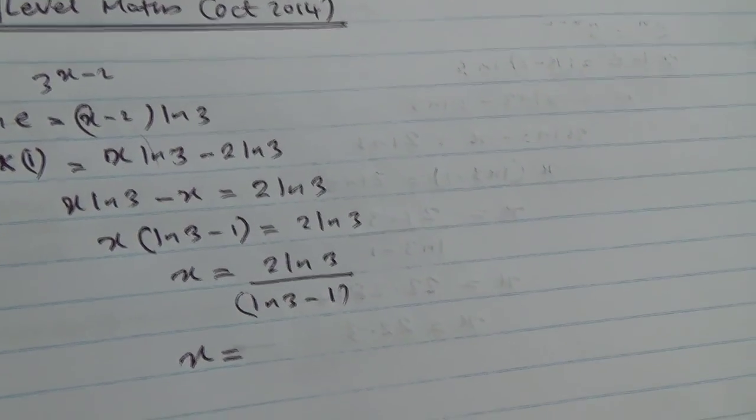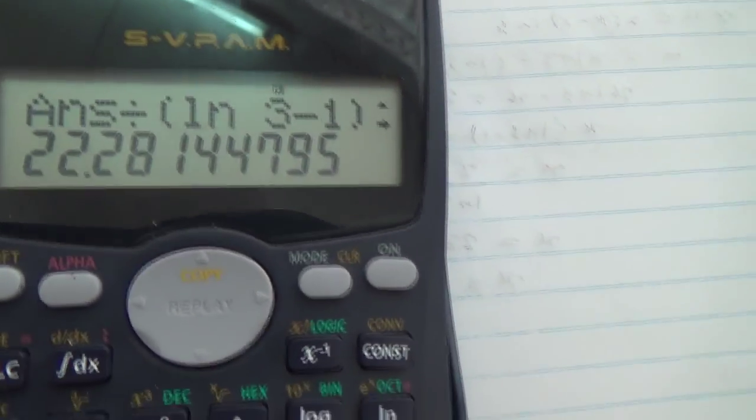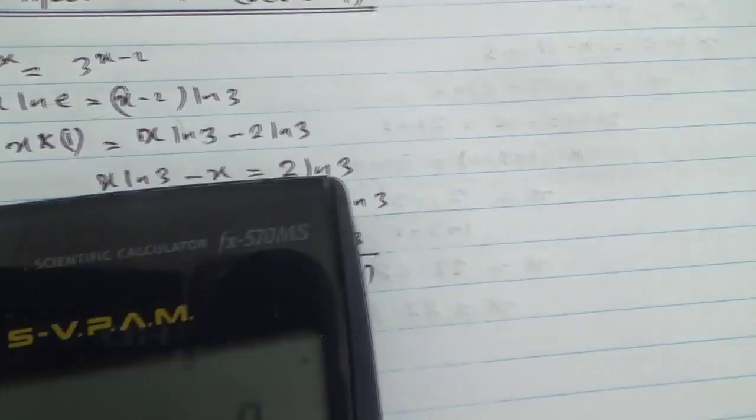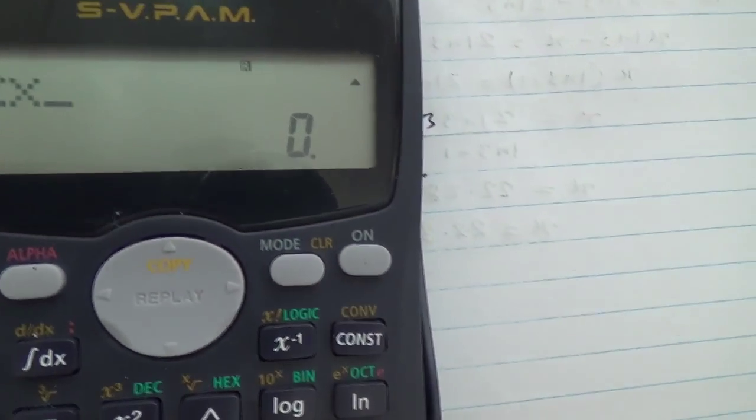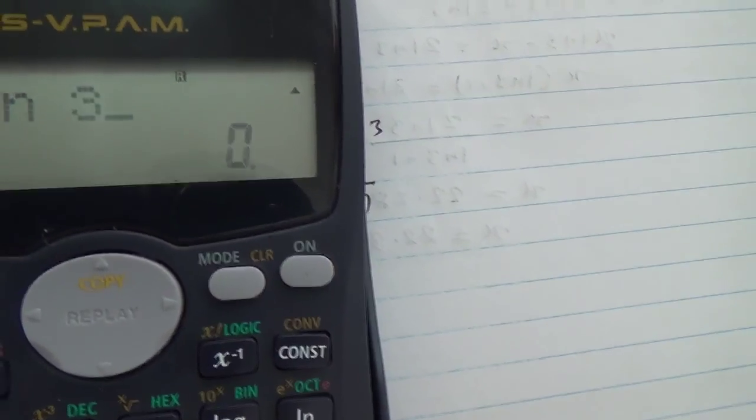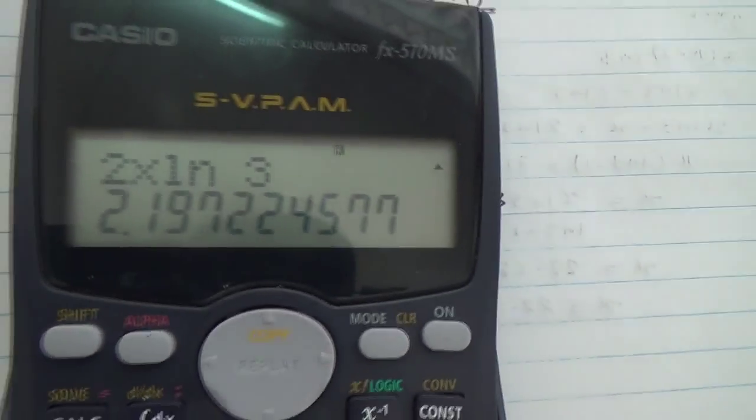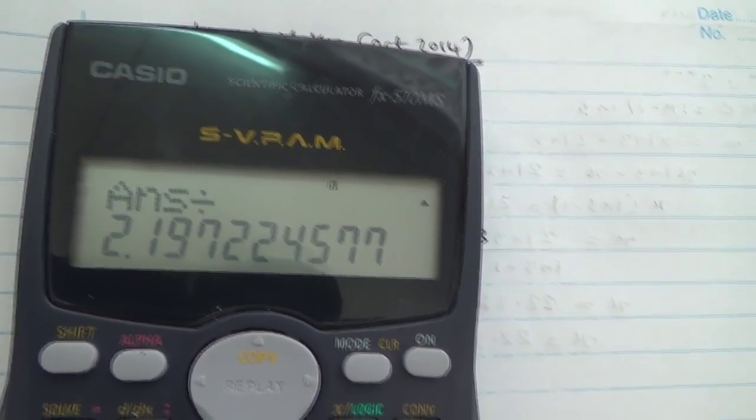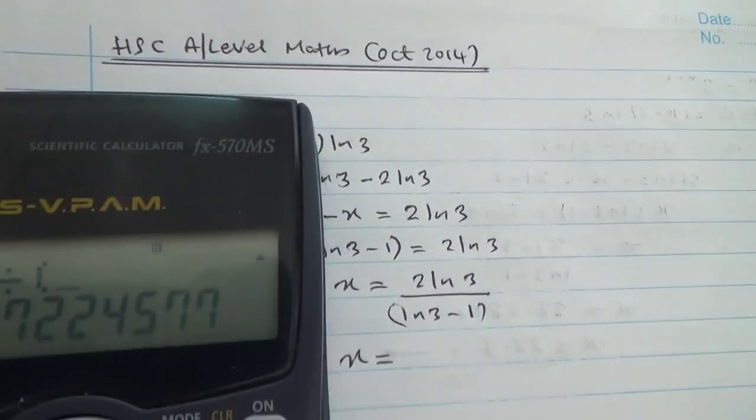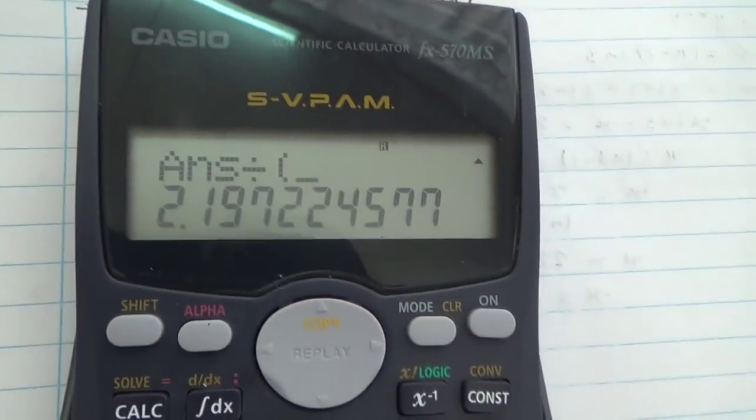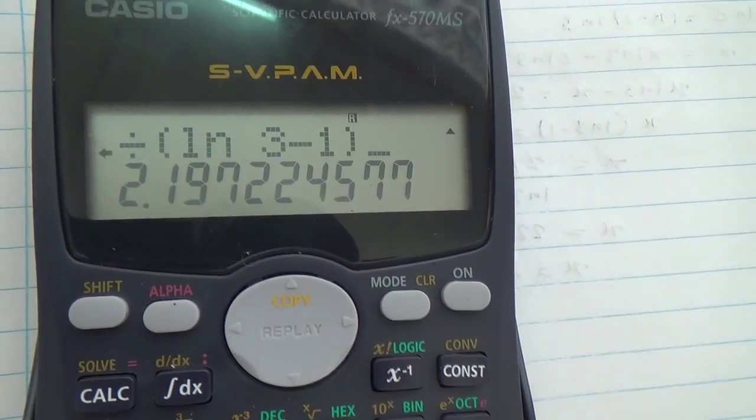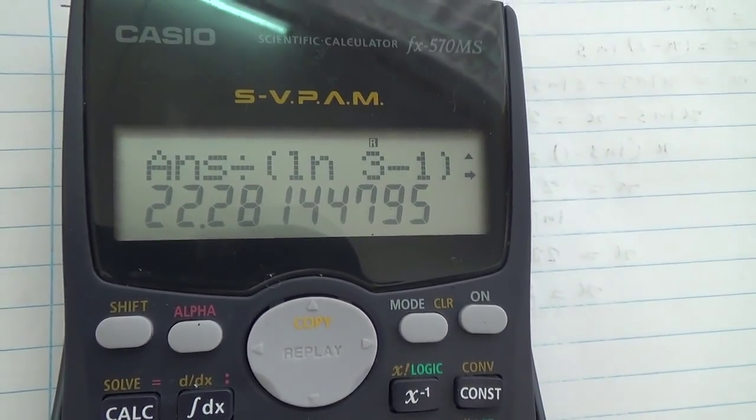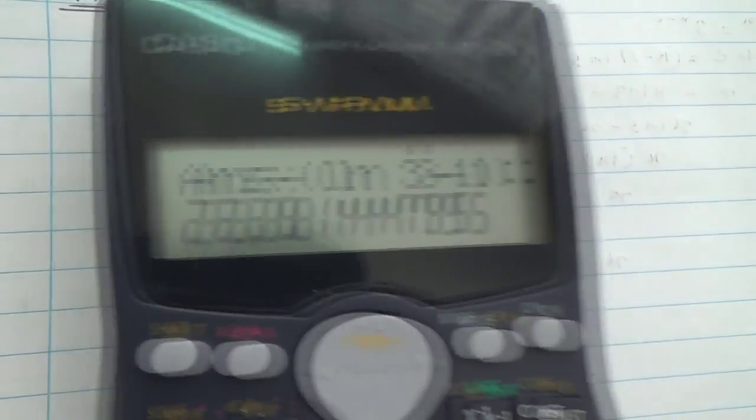And what x is going to be, we can just do that in the calculator. Okay, so we have 2 ln 3, right, so that's 2 times ln 3 is going to give us this amount divided by in brackets ln 3 minus 1. So, now ln 3 minus 1, close the bracket, and here we go, 22.281.